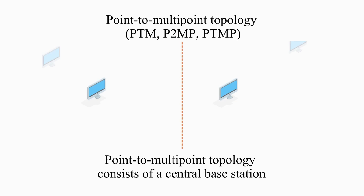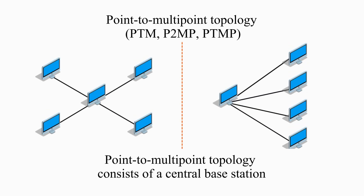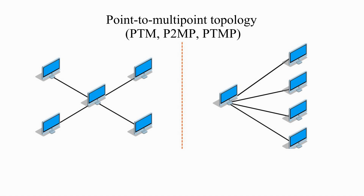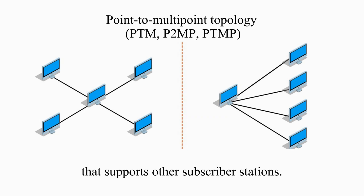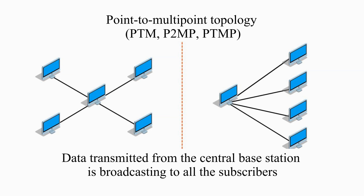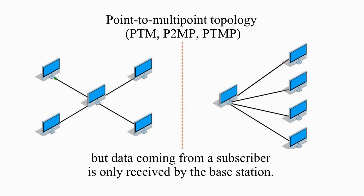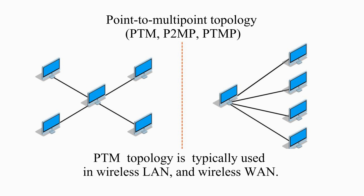Point-to-multipoint topology consists of a central base station that supports other subscriber stations. Data transmitted from the central base station is broadcast to all the subscribers, but data coming from a subscriber is only received by the base station. P2M topology is typically used in Wireless LAN and Wireless WAN.